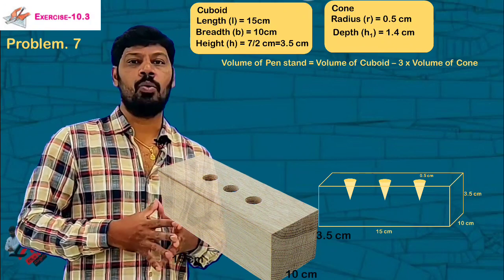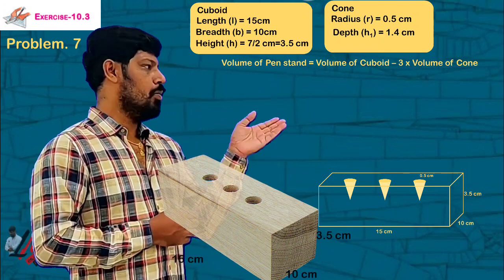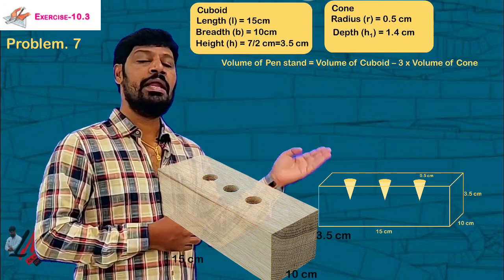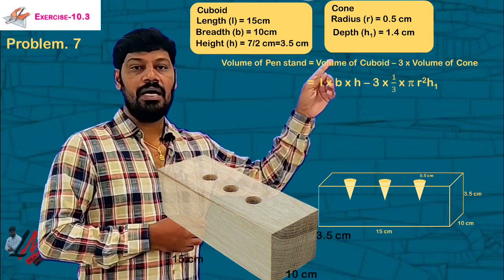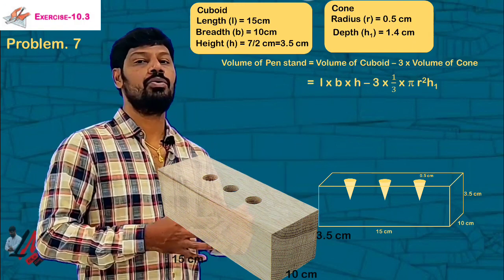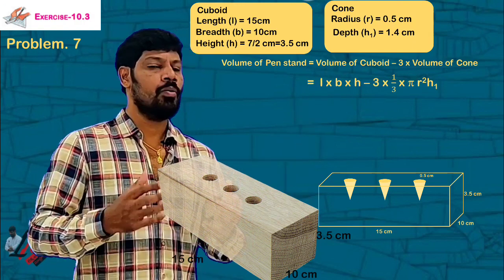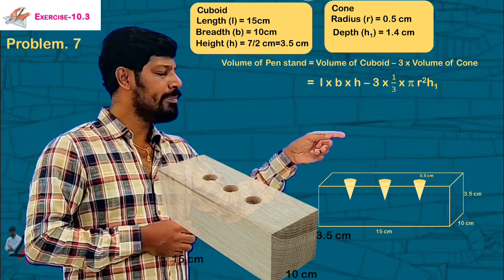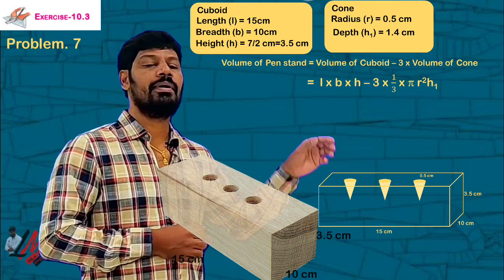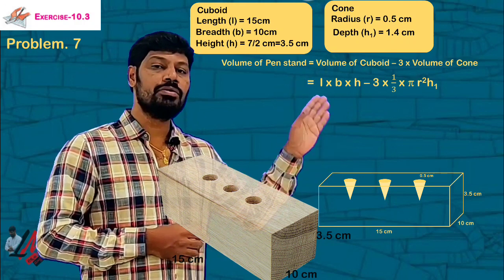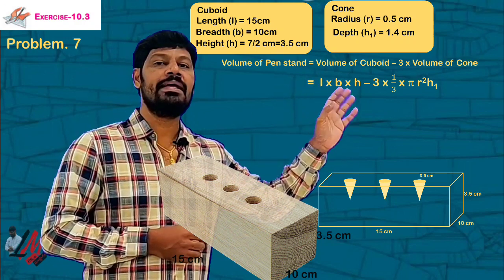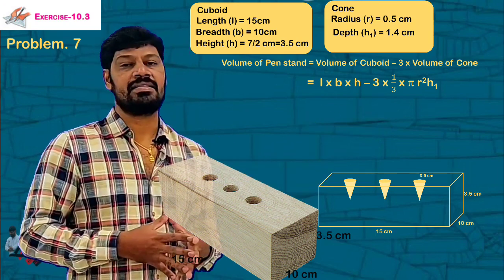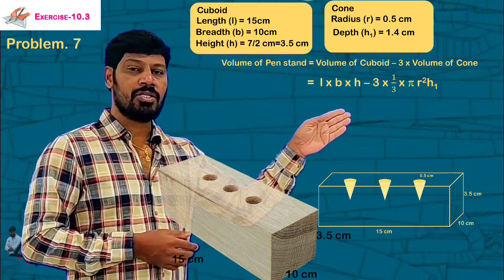The volume of the cuboid is L × B × H. So the formula is: L × B × H minus 3 into (1/3) π r² h₁. The 3 and 1/3 cancel, giving us: L × B × H minus π r² h₁.